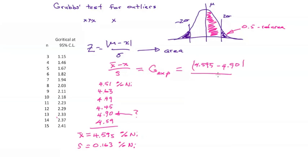Let's take the absolute value and divide by the standard deviation, 0.163. And we get 1.866.